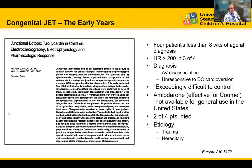Four years later, Garson and Gillette described four patients less than eight weeks of age also having JET, which they described as AV dissociation, unresponsive to DC cardioversion — which makes sense as it's an automatic rhythm. It was exceedingly difficult to control. At this point, amiodarone was not FDA approved in the U.S. until 1985, so they used a variety of different medications.